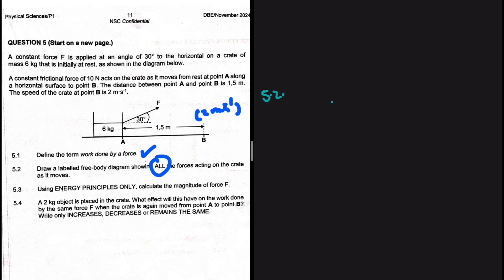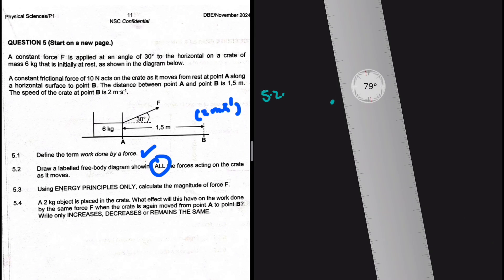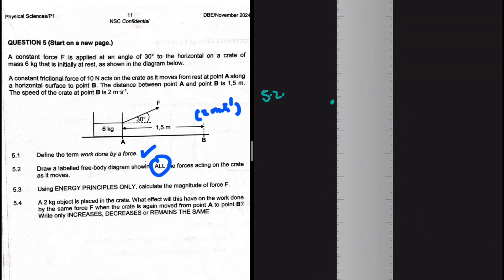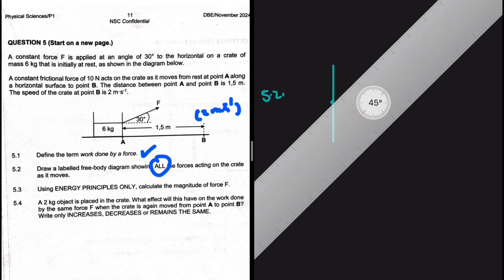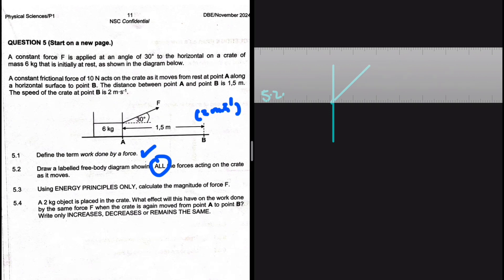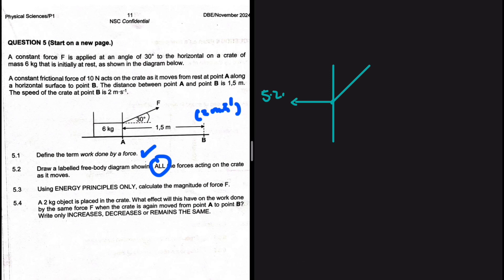And the mark allocation is 4 marks. So first things first, we need the weight. We put the weight first and then we think after, because we know that the weight is going to be there. And then we have the normal force, obviously, because it is resting on a surface. And then we have the applied force, which is at an angle. Do we have a frictional force? Yes. We have a constant frictional force. So I think that is all the forces that we need. So we have the force applied, we have the weight, normal force, and the frictional force. So 4 marks, 4 forces, seems like we're good to go.